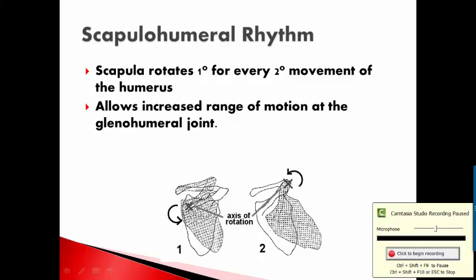Let's look at scapulohumeral rhythm. As the name implies, it's the relationship between the scapula and the humerus as we go through glenohumeral motion. The scapula rotates one degree for every two degrees of movement of the humerus, which basically allows an increased range of motion of the glenohumeral joint. If your scapula did not move, you would have about 90 degrees of glenohumeral abduction as your full range of motion, which would be quite limiting.